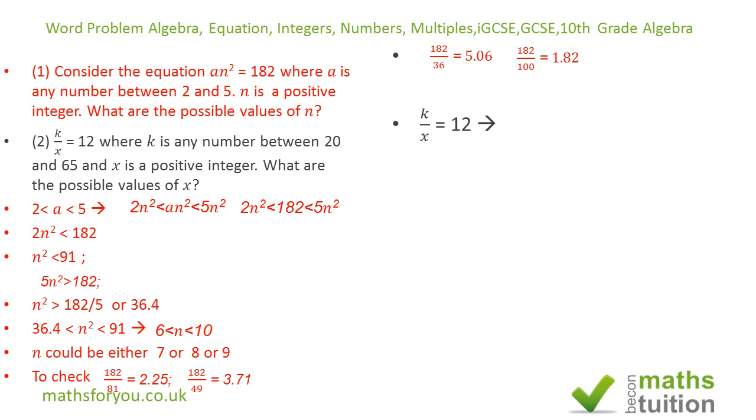Now question 2 says k/x = 12, which means that k/12 = x. And x has got to be a positive integer value.